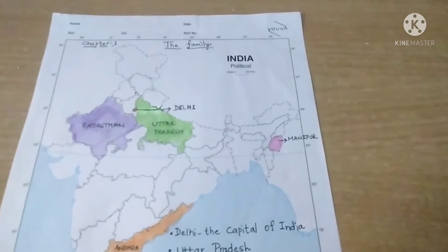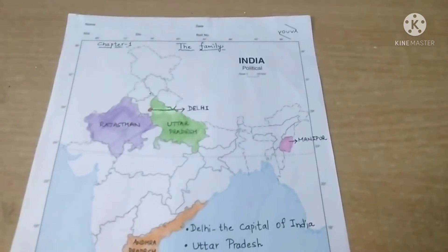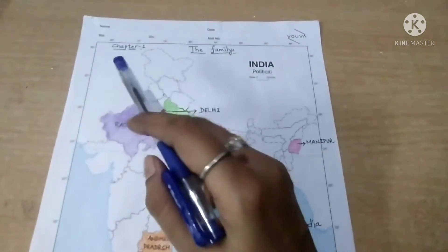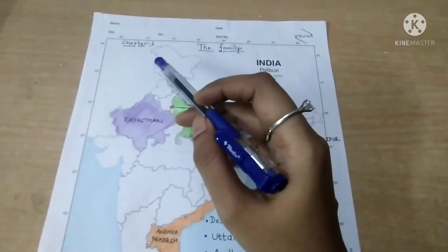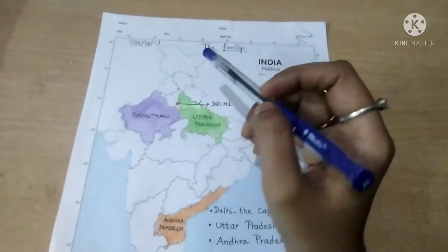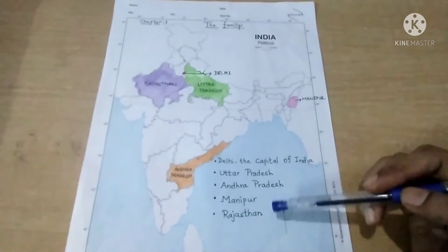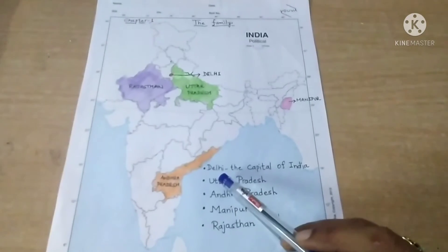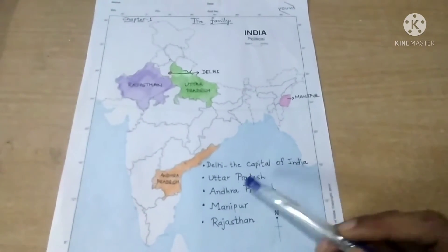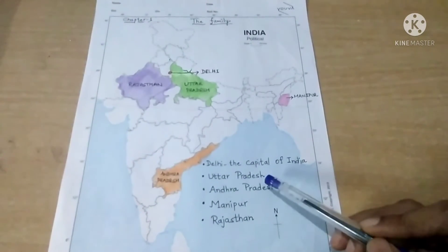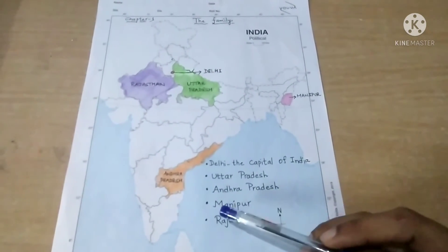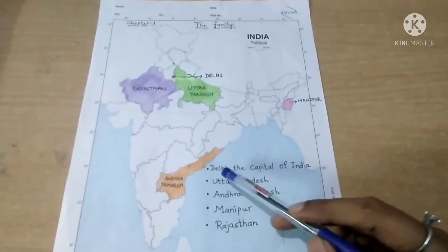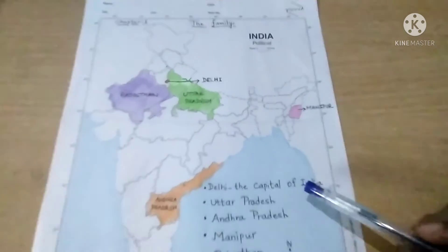First of all, we are going to start with the map work of chapter number 1. We will write 'Chapter 1 — The Family' at the top. The places we have to mark on the map of India are: Delhi the capital of India, Uttar Pradesh, Andhra Pradesh, Manipur, and Rajasthan. Let us start with Delhi, the capital of India.